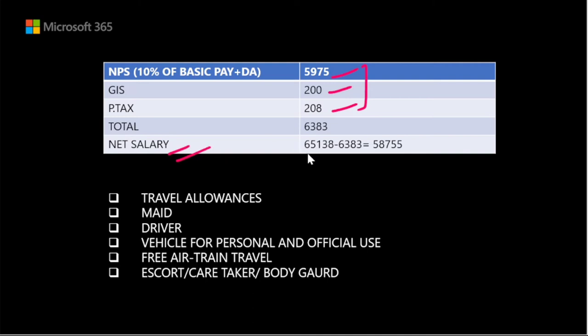The net salary credited to the bank account is ₹65,138 minus ₹6,383, which equals approximately ₹59,000. So the actual net salary deposited in your bank account is around ₹59,000.